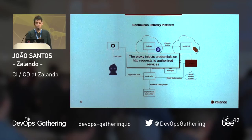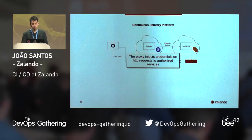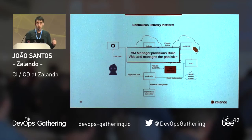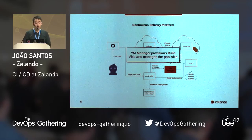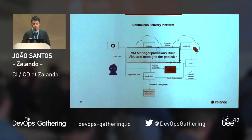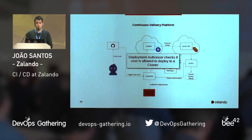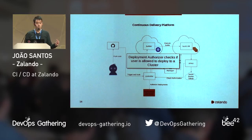CDP proxy is built on top of our open-source Skipper proxy. The VM manager provisions build VMs and manages pool size, ensuring we have enough build VMs while still being cost-effective. The VM manager communicates with the controller using an NATS event bus. And last but not least, the deployment authorizer checks if the user is allowed to deploy to a cluster — a user in this case means a person who either pushed a commit, merged a pull request, or re-triggered a pipeline.